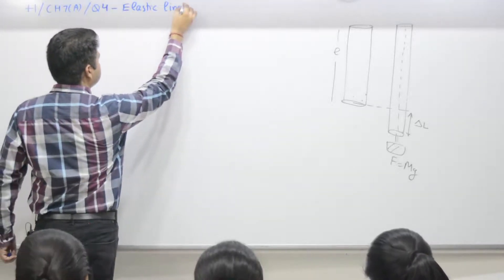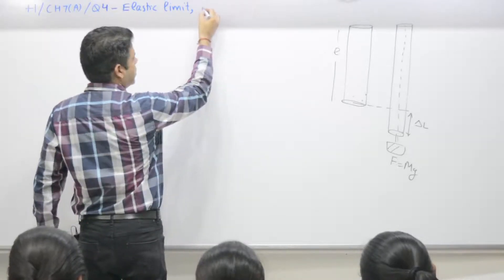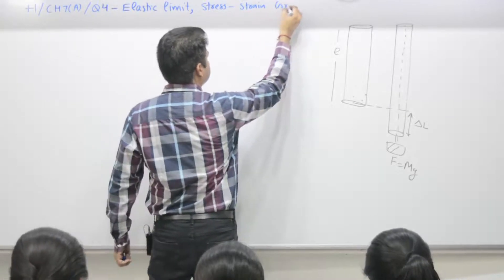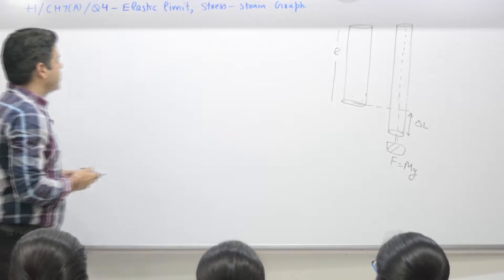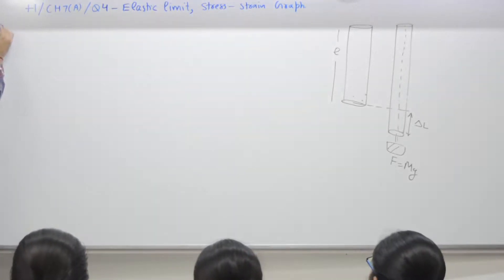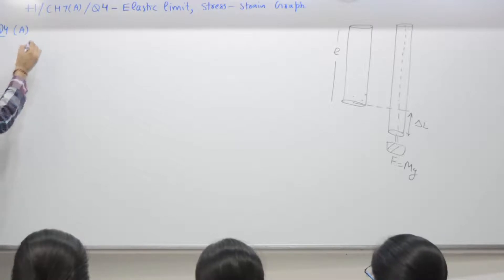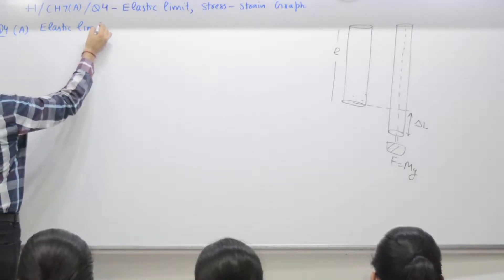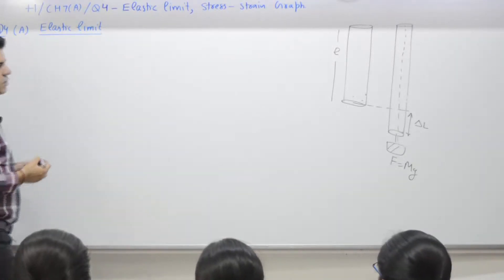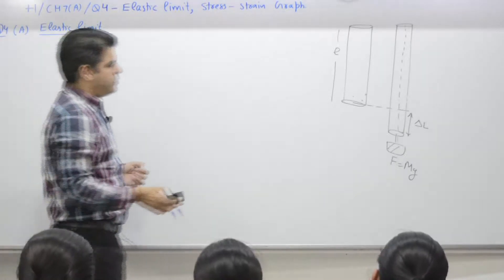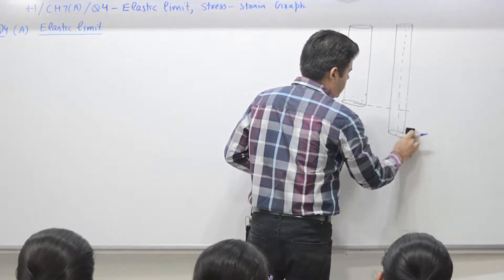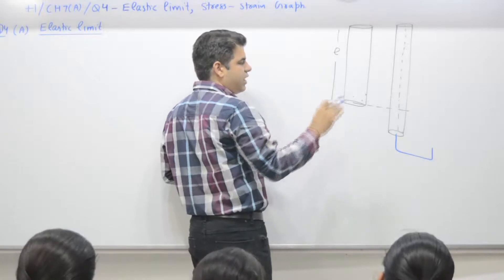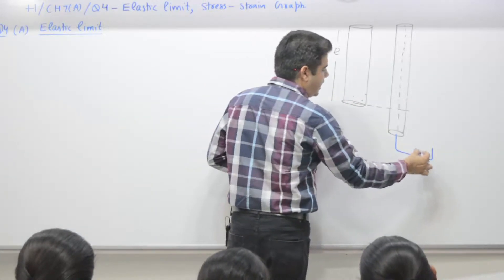Elastic limit — stress-strain graph for a given wire. How you perform this experiment in the lab: you have a pan, you can add weight. Say no weight, length is L. You add 1 kilogram weight, 2 kilogram weight, and you keep on adding weight.